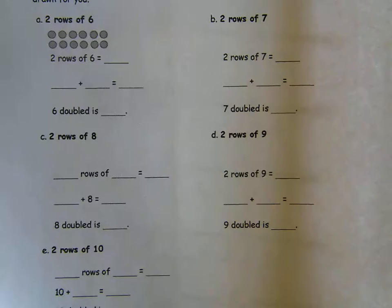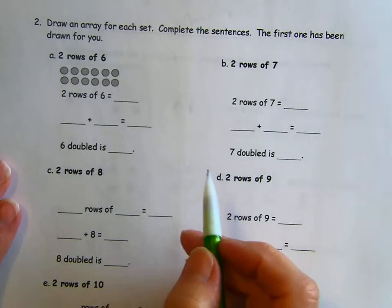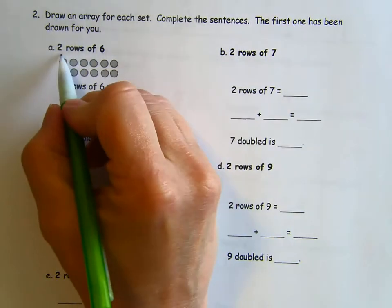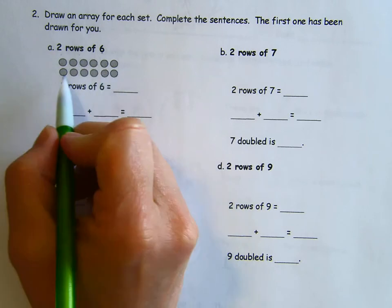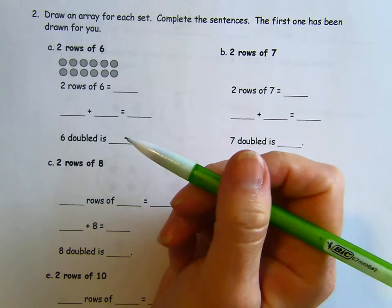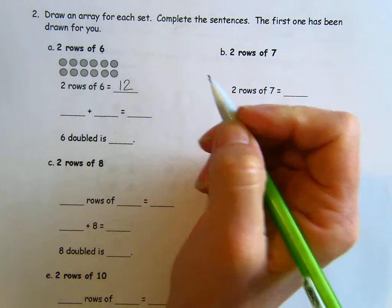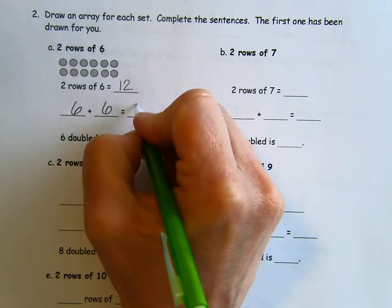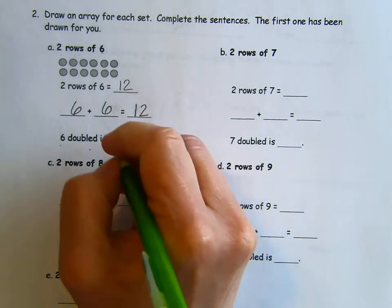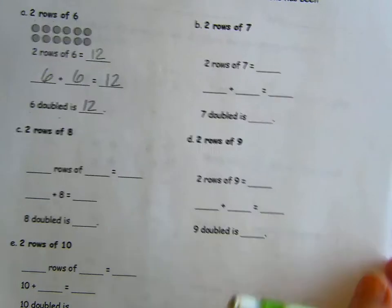On page 72, just like the second page of our problem set, we are drawing an array now to represent our doubles facts. So two rows of six. There's six and there's six, just like we had two circles on the last page. Now we're just doing it in an array. Two rows of six is 12. Six plus six equals 12. Six doubled is 12. We took six and we doubled it. Now we've got 12.